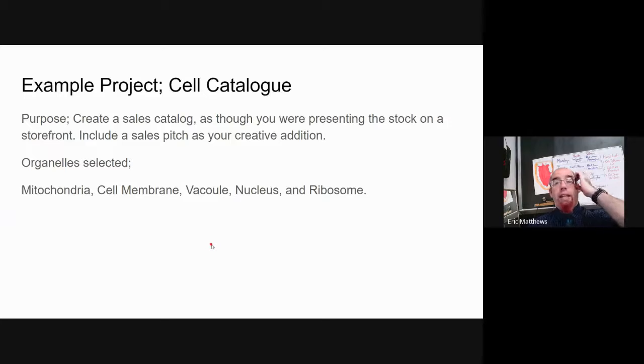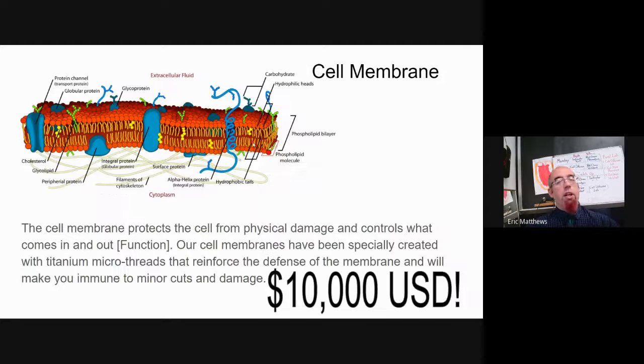So first example is the standard. This is what we used to do before COVID when everybody was here in the classroom. The standard boilerplate that I would offer everybody is a cell catalog, where you are creating like a magazine sale catalog, trying to convince people to buy your cell pieces, to replace their own cell pieces. So you're going to select what organelles you want to do. These are the five that I picked for this one. You're going to need to include a sales pitch. That will be the creative side of things.